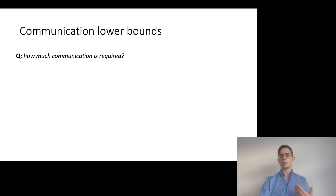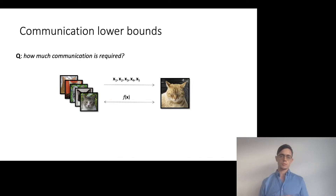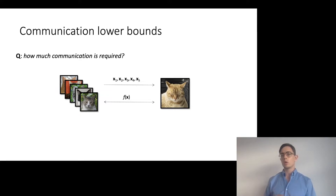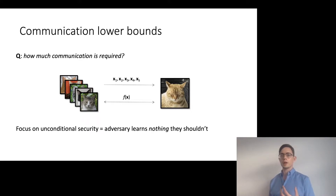Note that we can always compute the function insecurely by simply sending all the inputs to some designated party, letting them do the computation and return the results. So what we ask is, compared to this trivial setting, what overhead in communication is required in order to do secure computation? And we focus on unconditional security where the adversary learns nothing about the inputs of the other parties that they shouldn't.